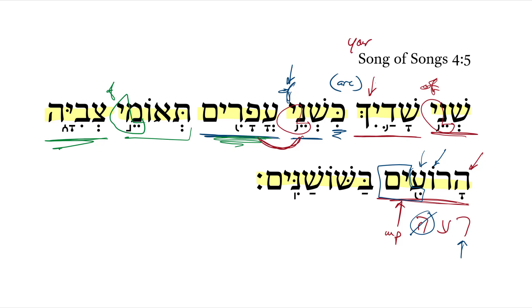Then finally we get the beth preposition. I think this is best taken as a spatial beth, meaning 'among' — among the lilies.